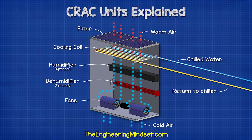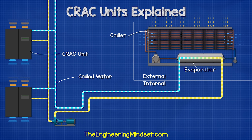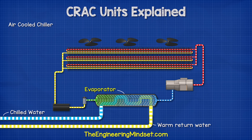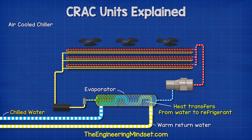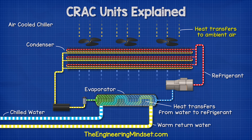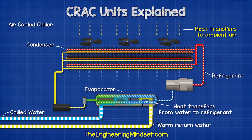The water returns to the chiller carrying the heat it collected. It enters the evaporator where the heat is transferred into a refrigerant. The refrigerant removes the heat from the water and cools it down, and the water cycles around again to collect more heat. The refrigerant then flows to the condenser, where fans move ambient air over the pipes to reject the heat to the atmosphere, before flowing back to the evaporator to collect more heat from the water.